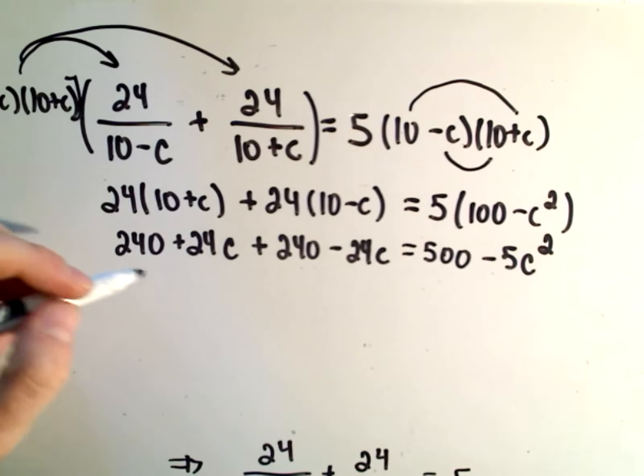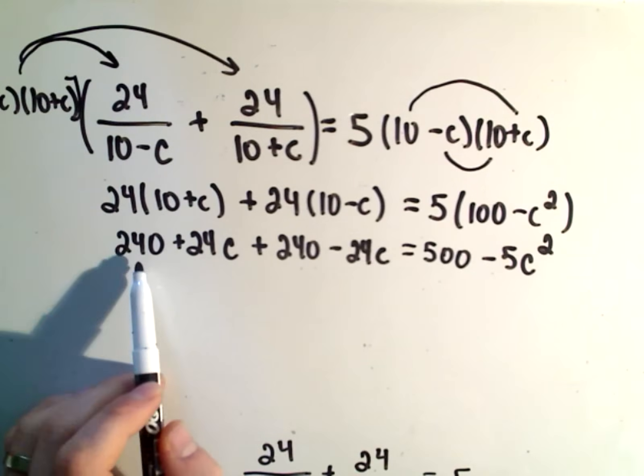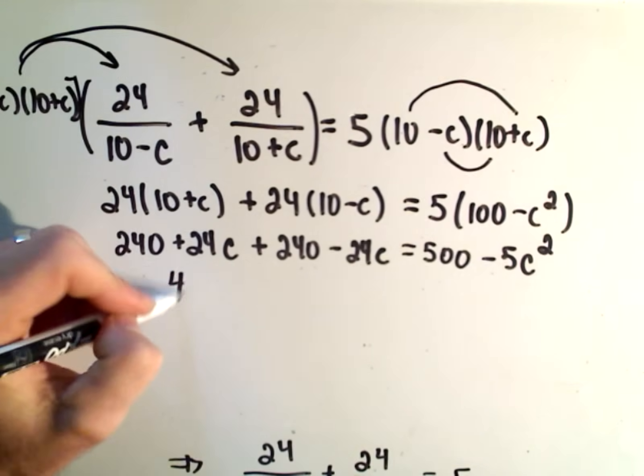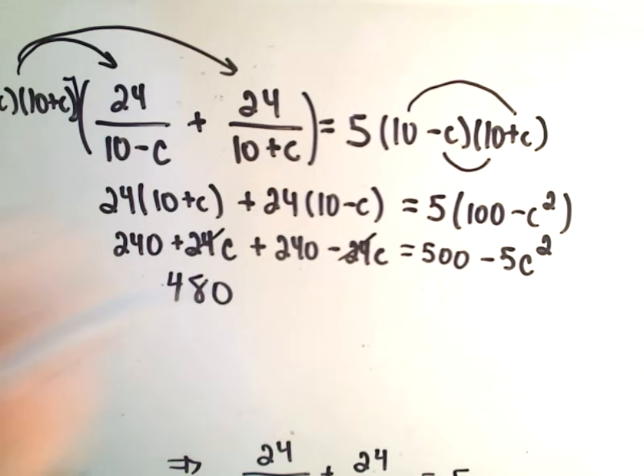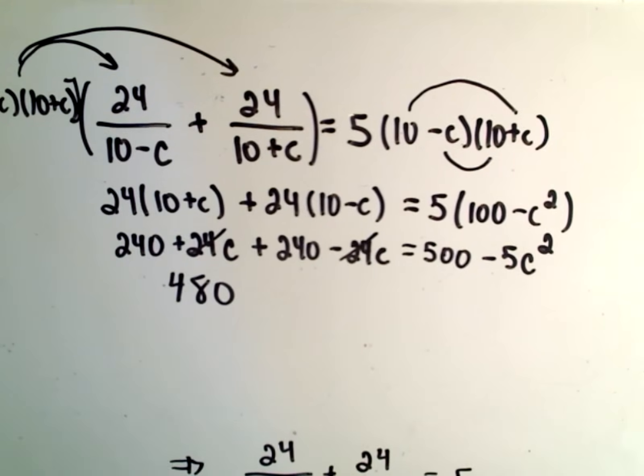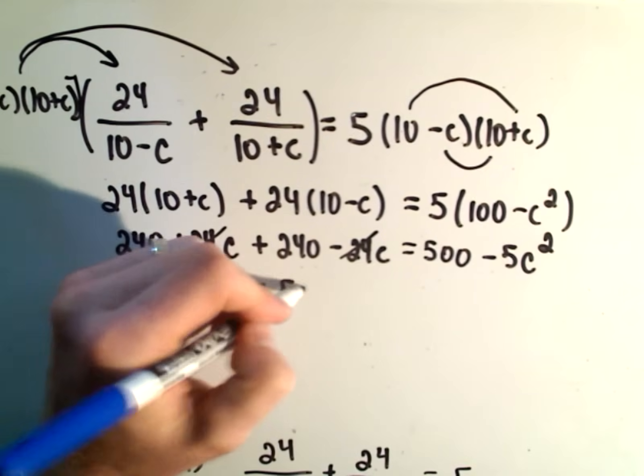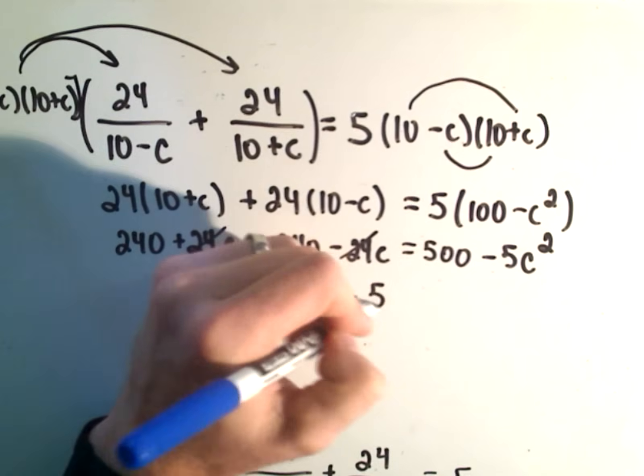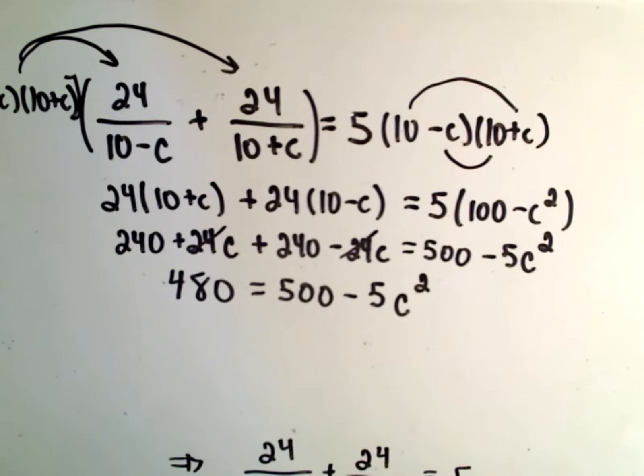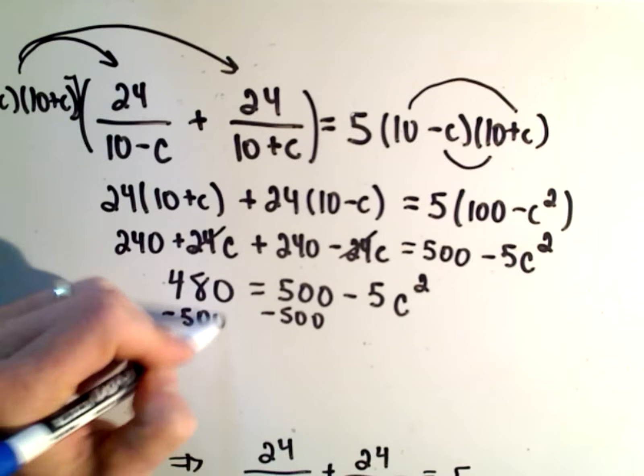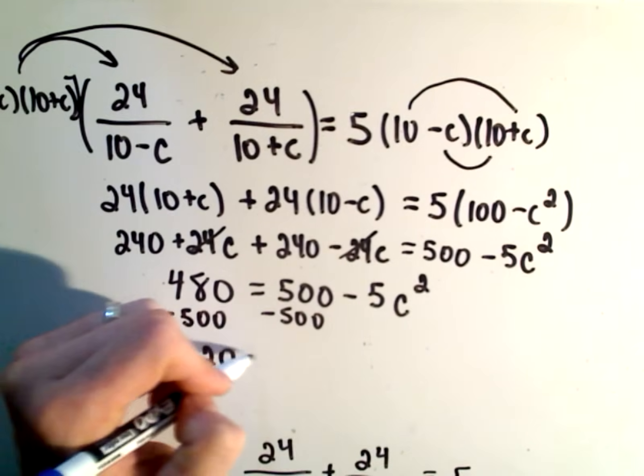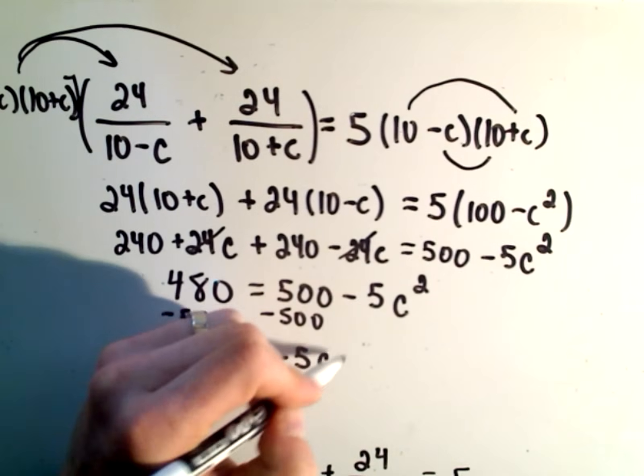In quadratics, you try to set equal to zero and cancel or factor. So 240 and 240, well, that's 480. Notice the positive 24C and the negative 24C will cancel out. On the right side, I still have 500 minus 5C squared. Well, if I subtract 500 from both sides, I'm going to get negative 20 equals negative 5C squared.